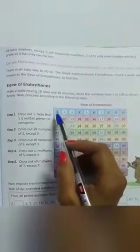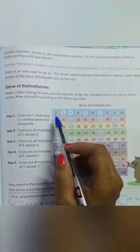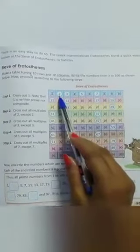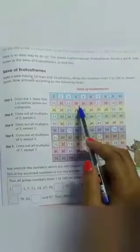Then step 1, cross out 1. Know that 1 is neither prime nor composite. Because 1 is not prime nor composite. Then cross out all multiples of 2, except 2. Cross all multiples of 2, means 2 in table, 4, 6, 8, 10, 12, 14, 16, 18, 20. Then cross all multiples of 2, except 2.